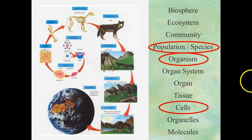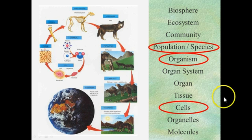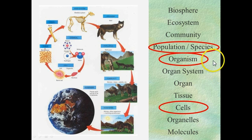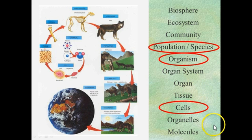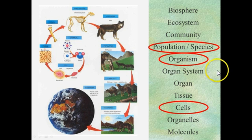These levels of organization are a very important list of things to know. You should be able to know the things smaller than an organism: organ systems, organs, tissues, cells, organelles, and so forth. So be sure that you are familiar with these levels of organization.